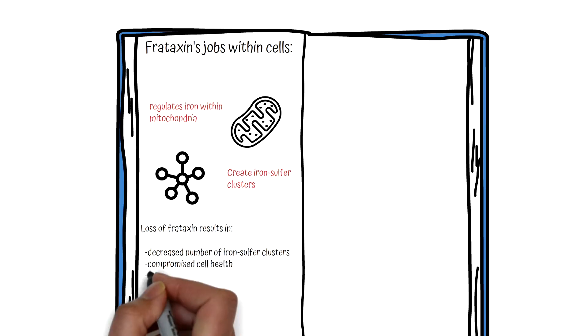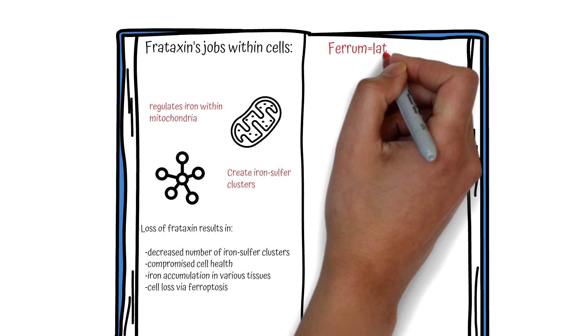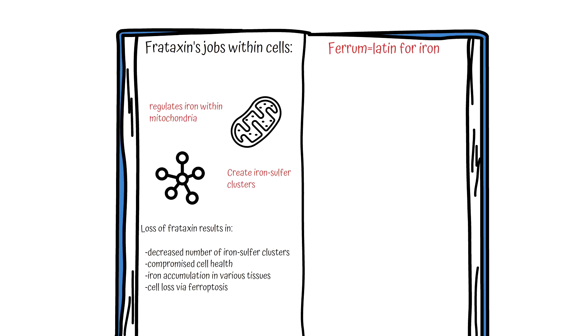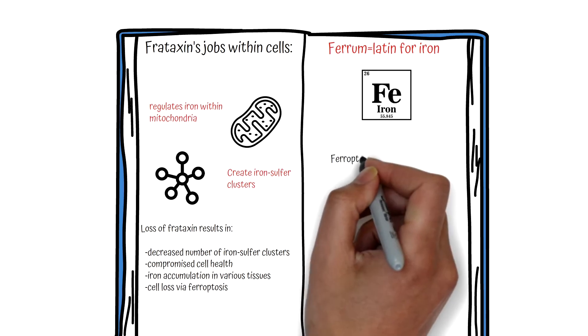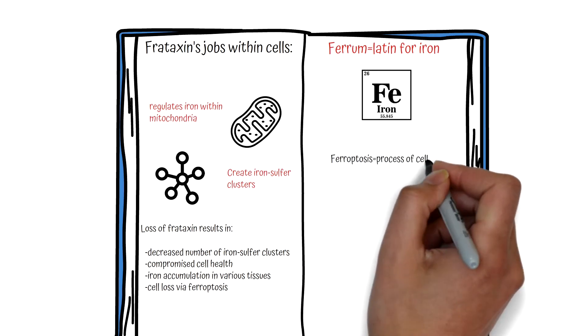Loss of frataxin decreases the number of iron-sulfur clusters, compromises cell health, leads to iron accumulation in various tissues, and potentially to loss of cells through a process called ferroptosis. Ferrum is the Latin term for iron and the source of the chemical symbol Fe.